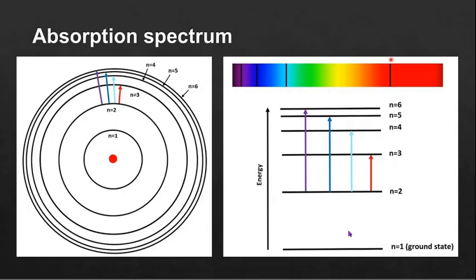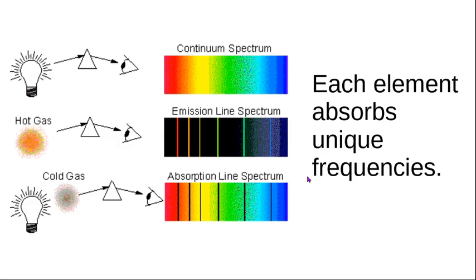In questions, the energy levels are often drawn as straight lines rather than circles. The energy gets bigger and bigger the further away from the center of the atom — just like in Aufbau diagrams. The small jumps correspond to red light, and the big jumps correspond to purple or violet light. A purple jump is a large energy difference, while the red one is a small jump.